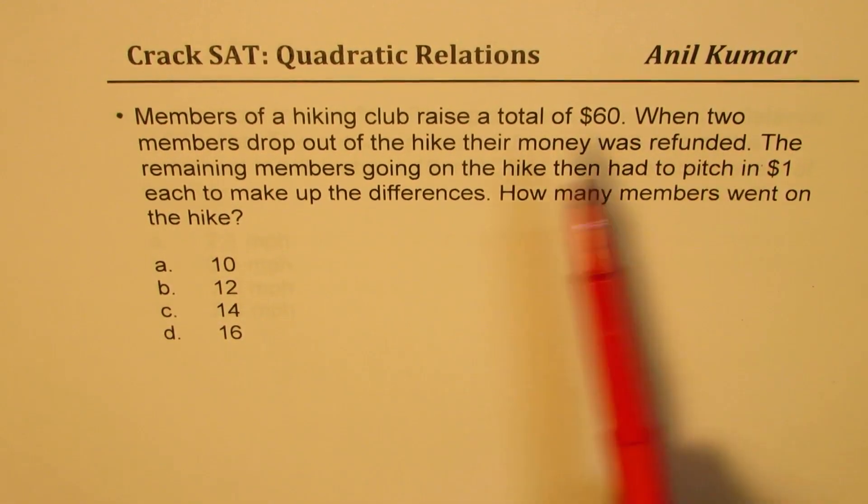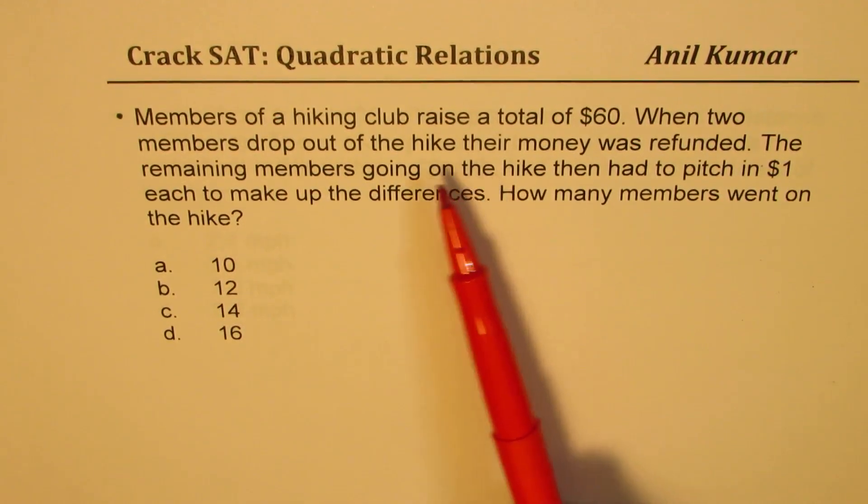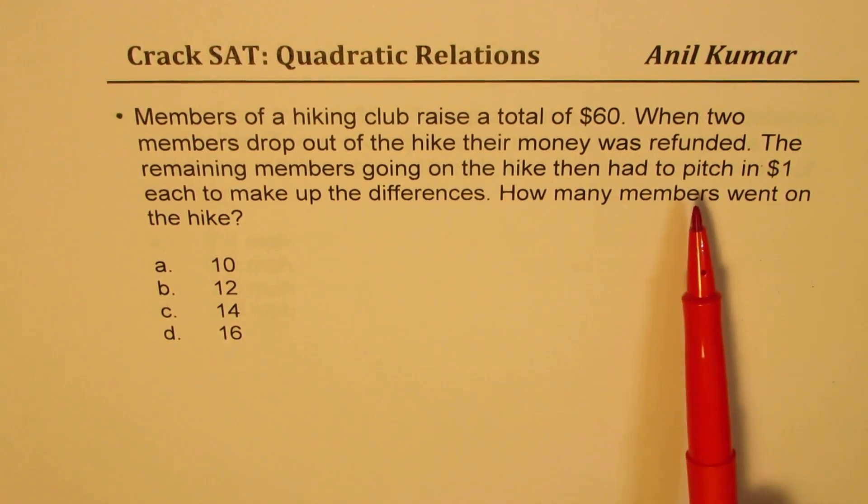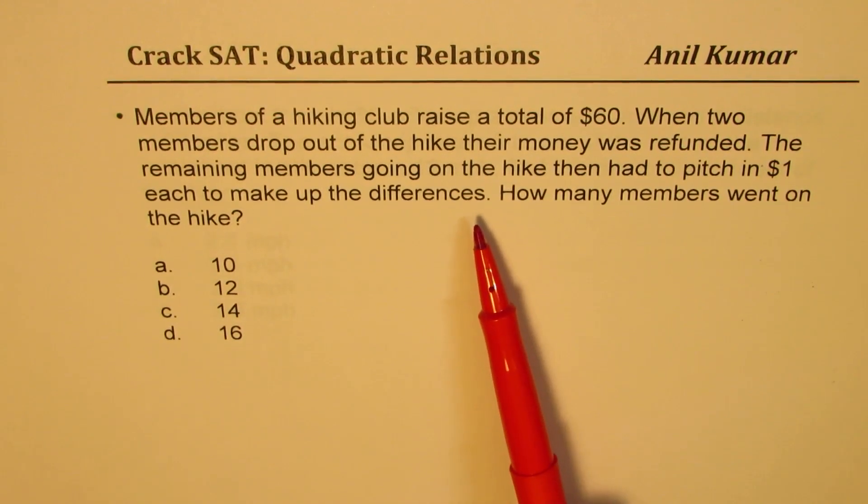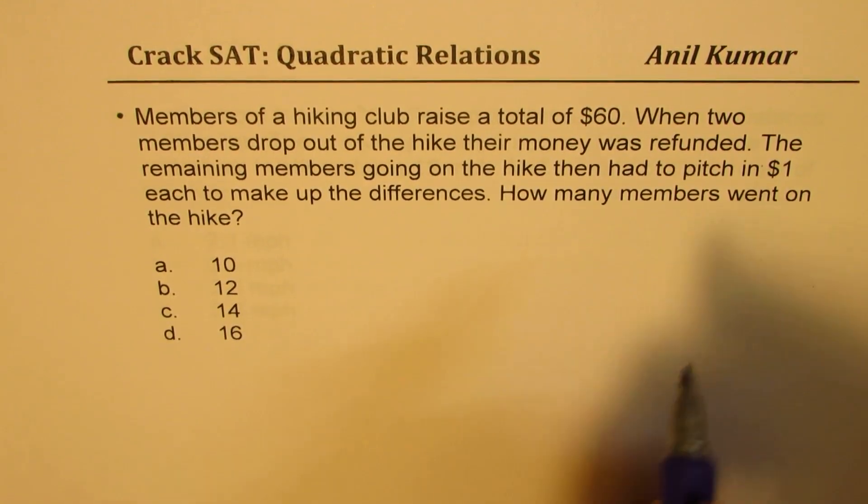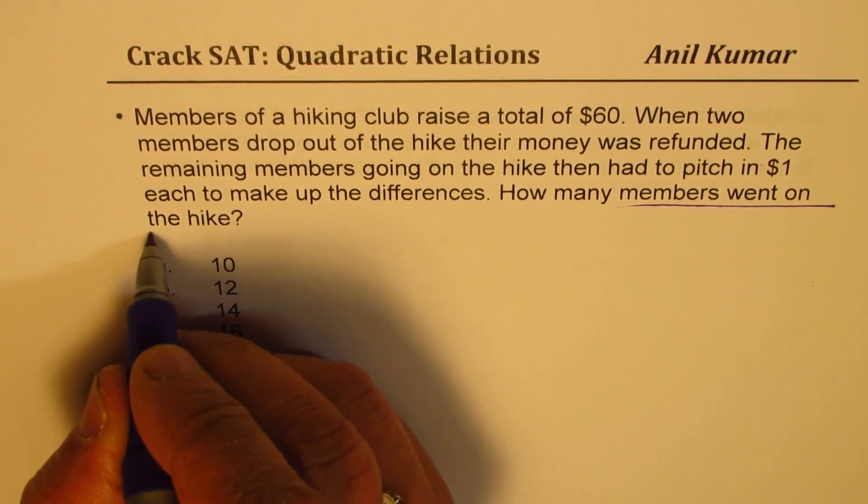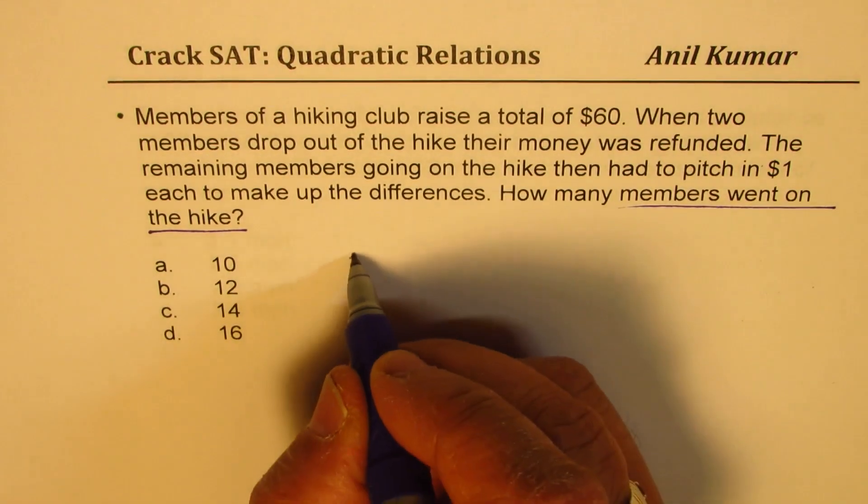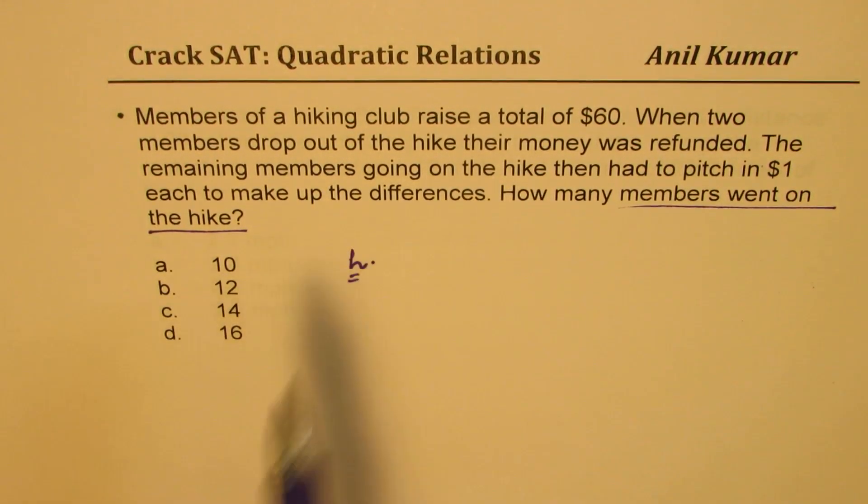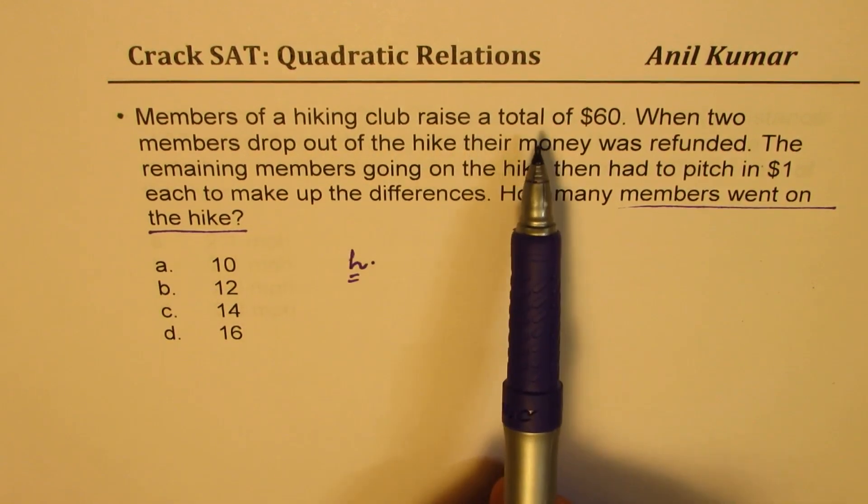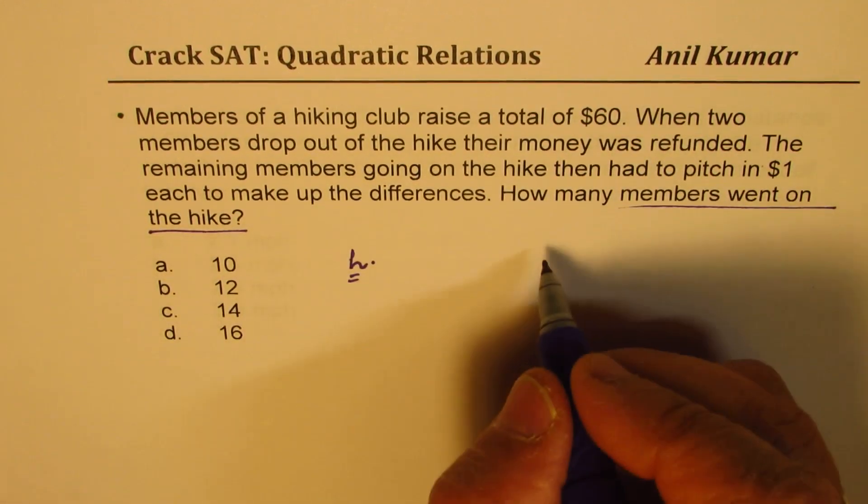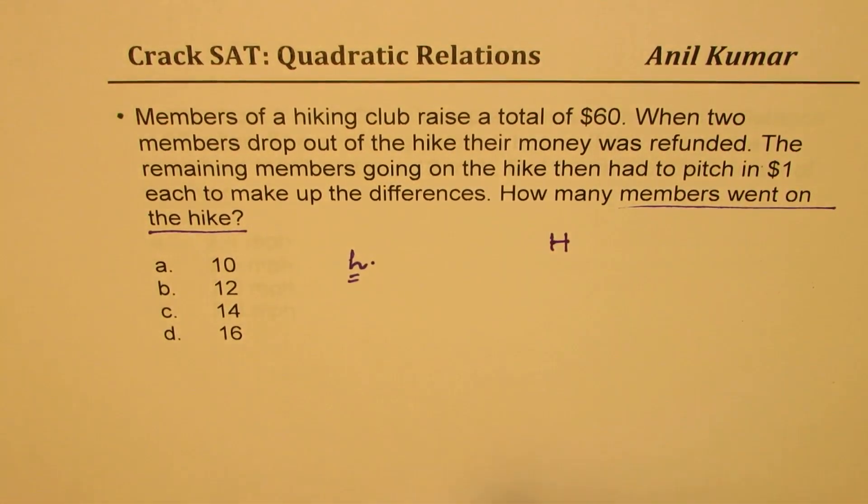Now here we have: Members of a hiking club raise a total of 60 dollars. When two members drop out of the hike, their money was refunded. The remaining members going on the hike then had to pitch in one dollar each to make up the differences. How many members went on the hike? So when they want us to find how many members went on the hike, let's say members went on the hike as h. But initially, members of the hiking club raised total, so all the members raised 60 dollars.